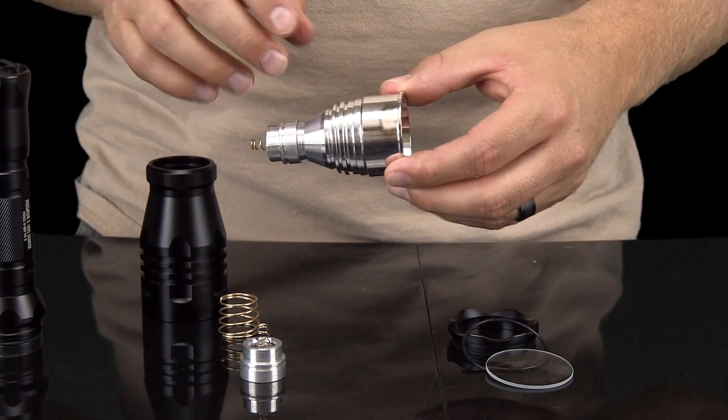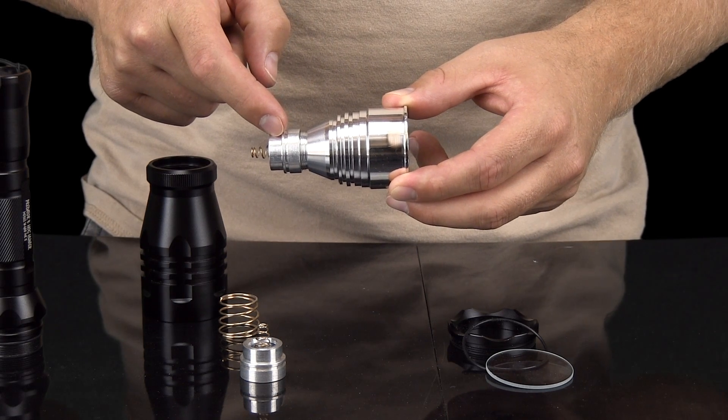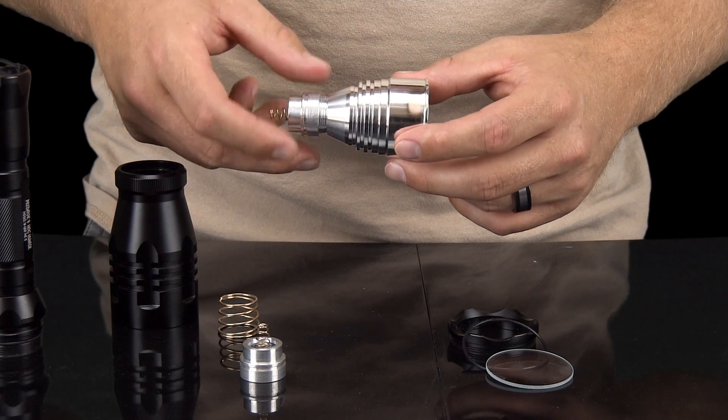Once the reflector is removed, you can easily unscrew the LED assembly from the reflective housing. Again, do not twist on the connected spring to unscrew the LED assembly.